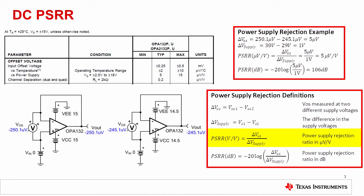Power supply rejection in volts per volt, or microvolts per volt, is defined as the change in offset voltage versus the change in supply voltage. Power supply rejection in decibels is defined as negative 20 times the log of the rejection in volts per volt. The negative sign makes the decibel version of PSRR a positive number.